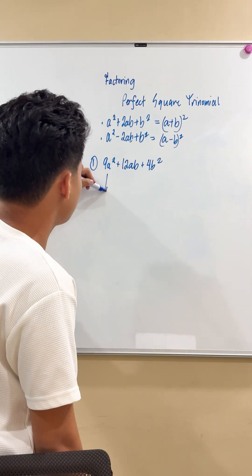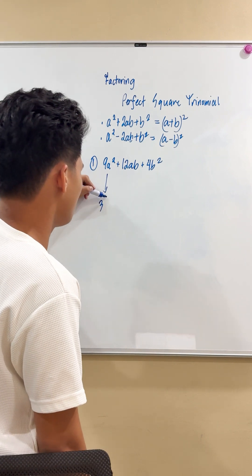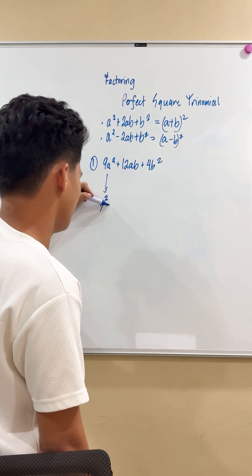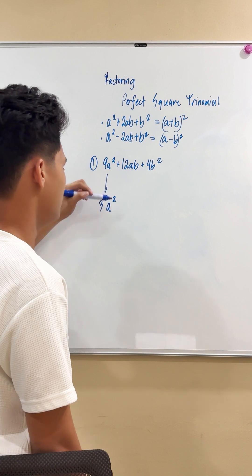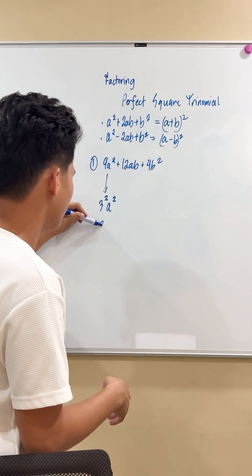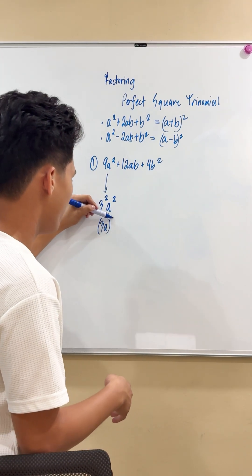For example, we know that 9 is actually 3 squared. And then a squared is obviously a squared. With this, we can express the exponent in the form of 3a quantity squared.